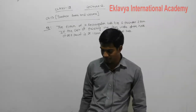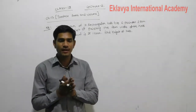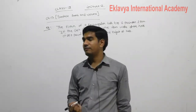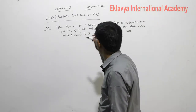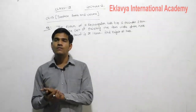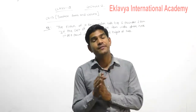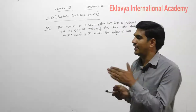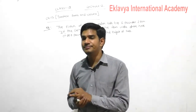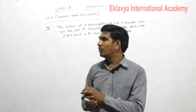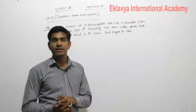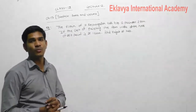Good morning students, once again welcome to online classes of Eklav International Academy. In the previous lecture — lecture one of Class 9 Surface Area and Volume — we discussed how to find the TSA of a cuboid, the area of four walls, five walls area, TSA of a cube, and area of four and five walls of a cube. In today's lecture, we will discuss different questions based on cube and cuboid.